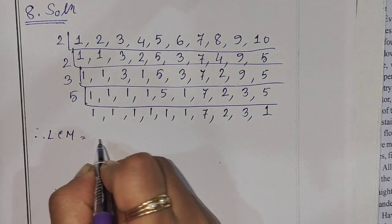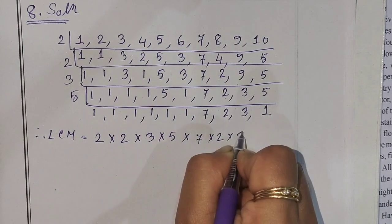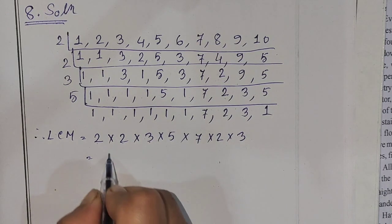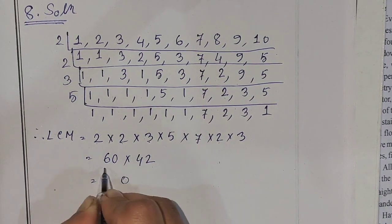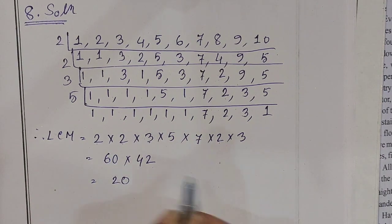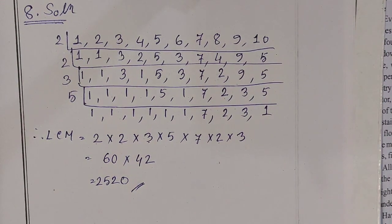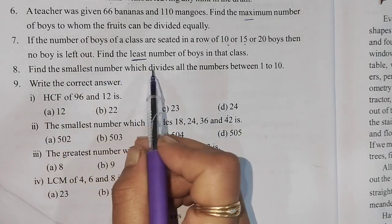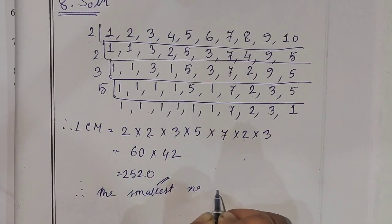LCM is equal to 2 × 2 × 3 × 5 × 7 × 2 × 3. We are going to put 2 times, 3 times, and 4 times. The smallest number which divides all the numbers between 1 and 10 is 2520.